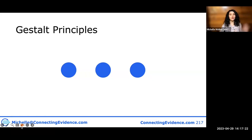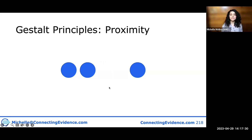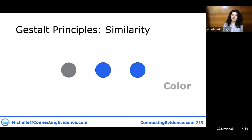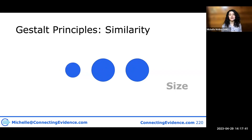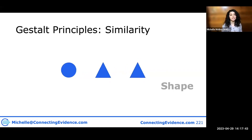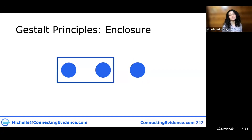Let's go over to my laptop so I can share some of these principles in real time. I'm going to use these three dots to highlight the principles. The first is proximity. When we have two things close to each other, we think of them as similar to each other. Other things that drive similarity are color, size, and shape. We also think things are similar when they're close together or connected.